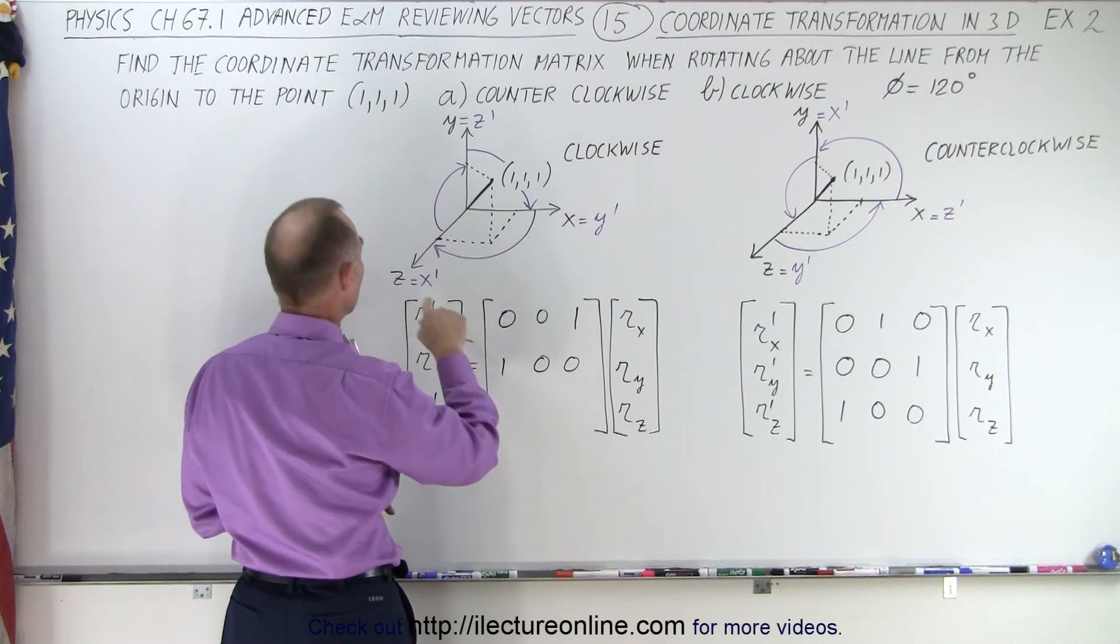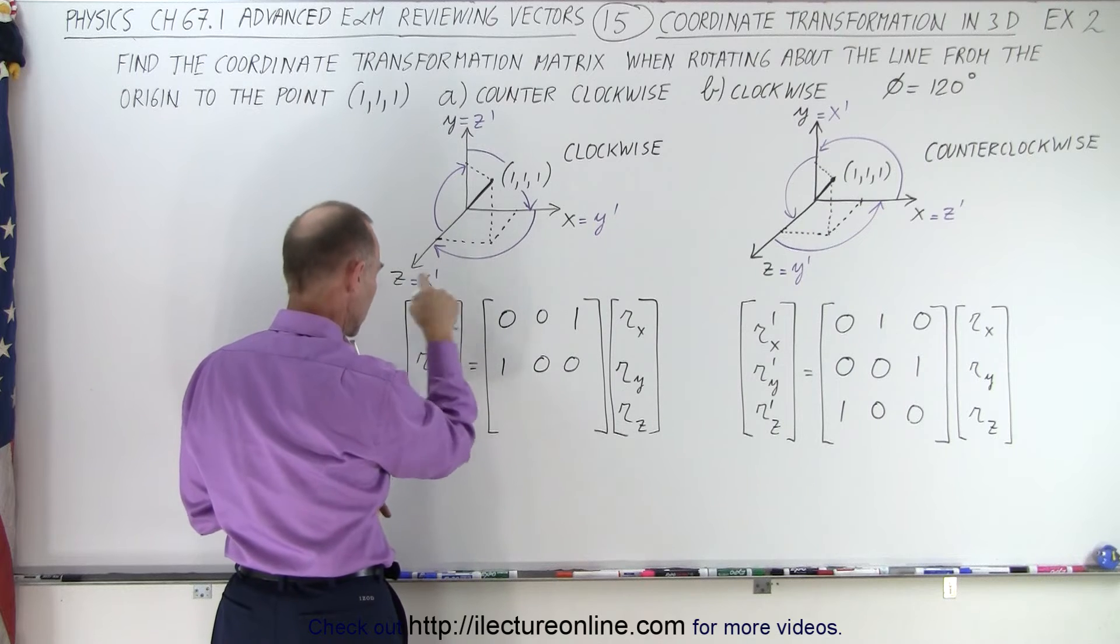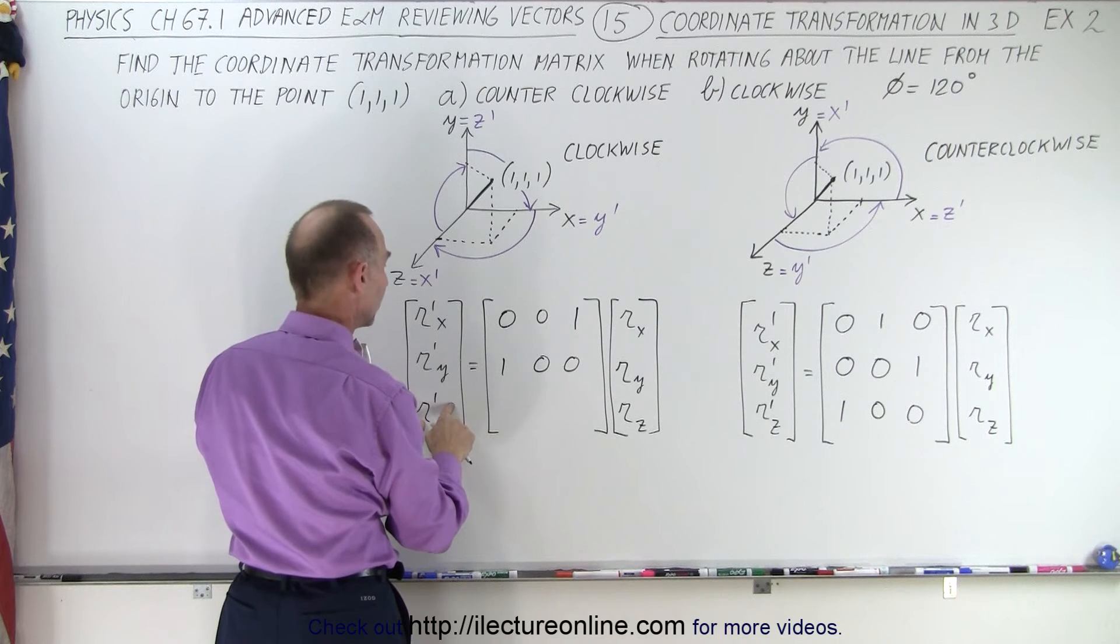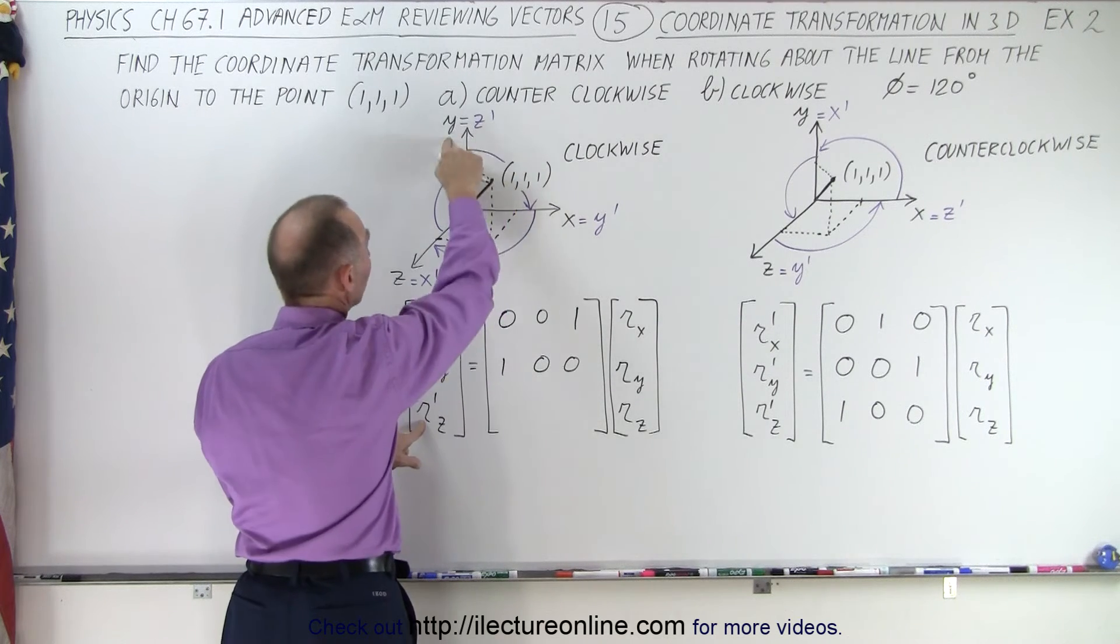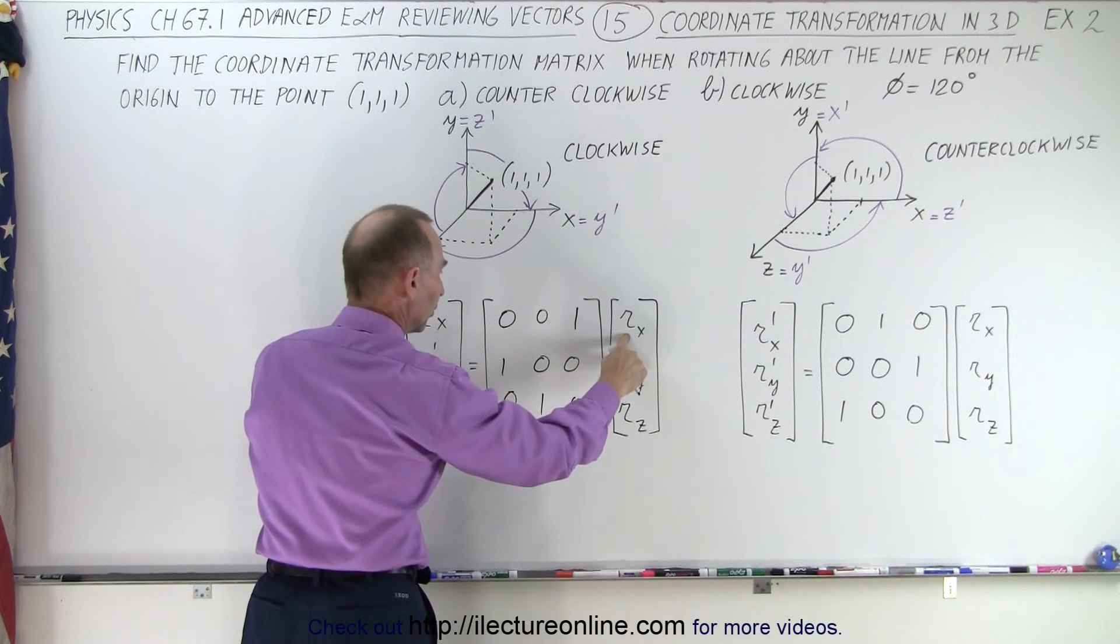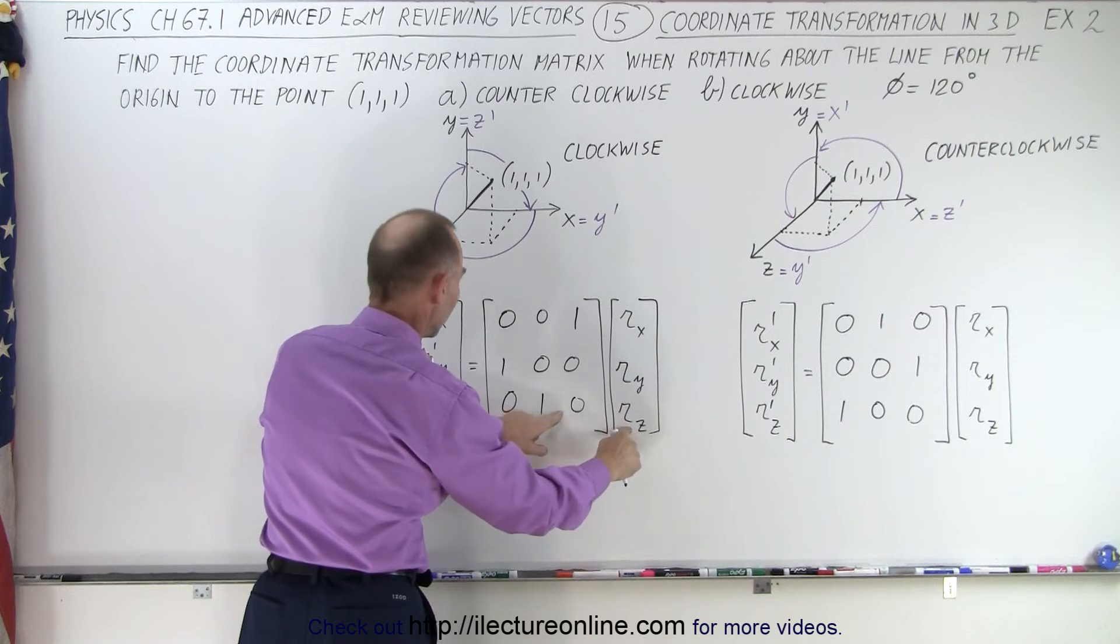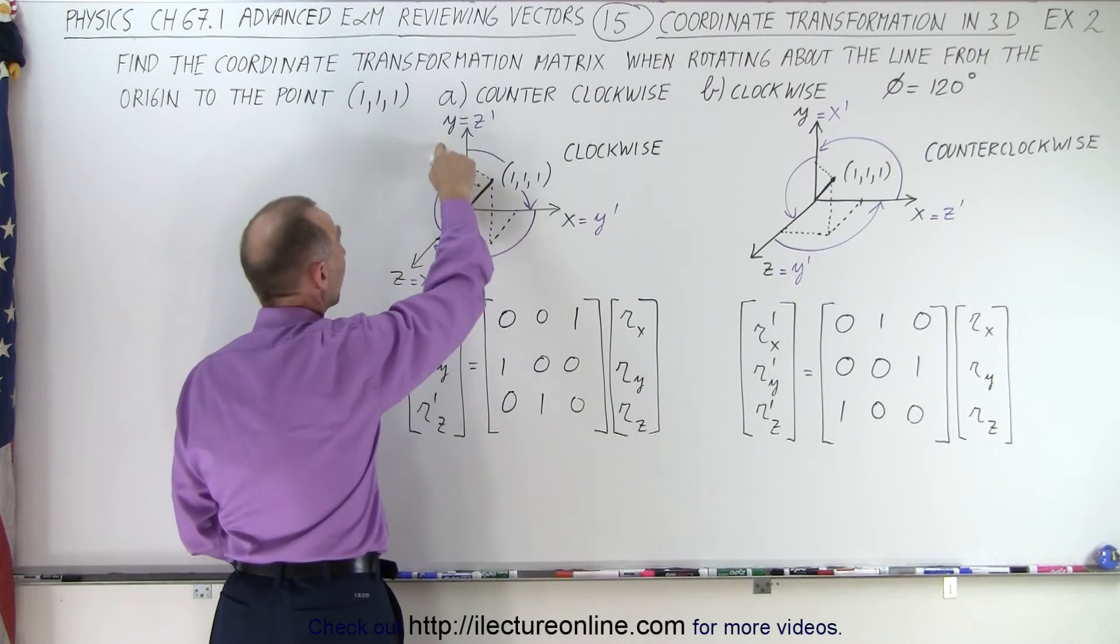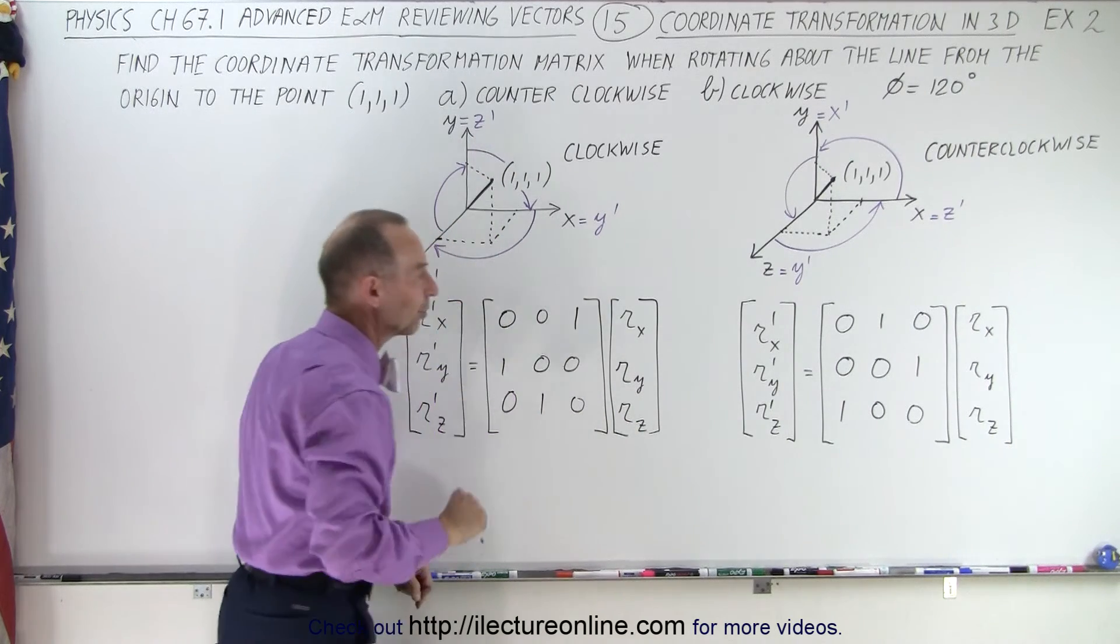And finally, I want the RZ to be equal to, Z prime to be equal to what? Z prime to be equal to Y. So I need a 1 there, a 0 and a 0. So 0 plus RY plus 0 gives me RZ prime. So Y gives me Z prime, that will be fine as well.